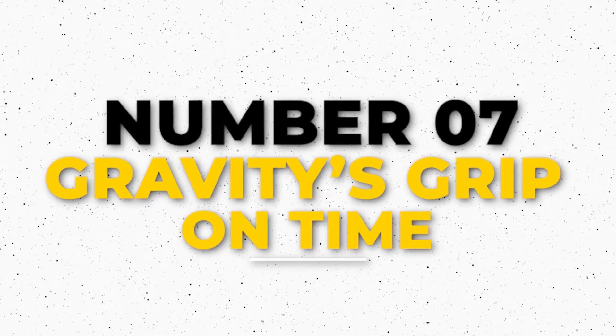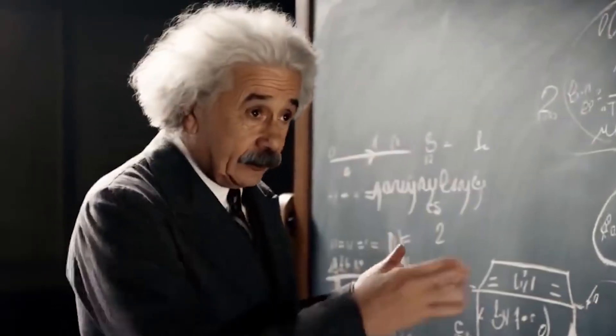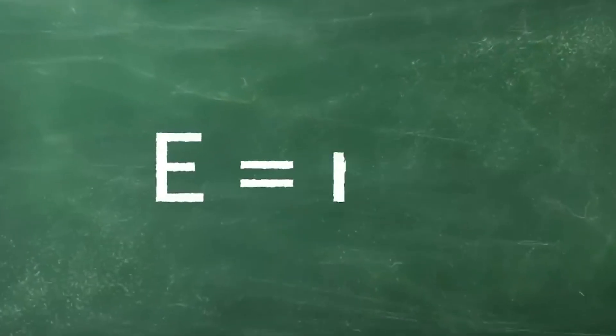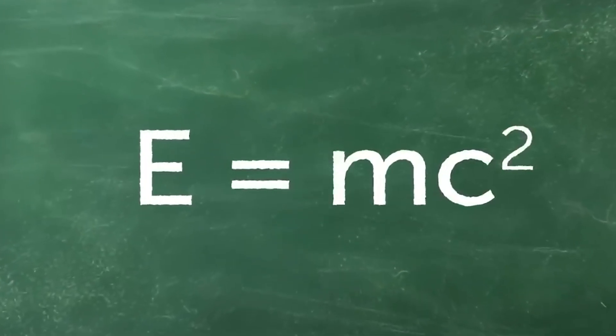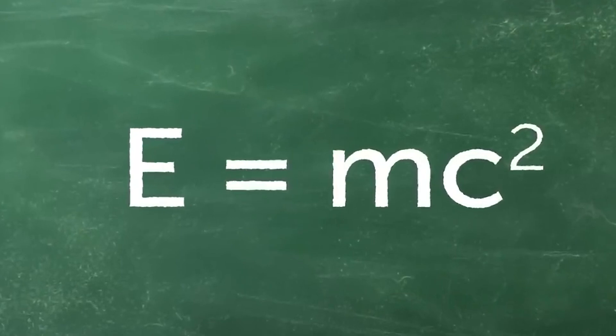Number 7: Gravity's Grip on Time. Einstein didn't stop there. A decade later, in his general theory of relativity, he revealed that time is also influenced by gravity.